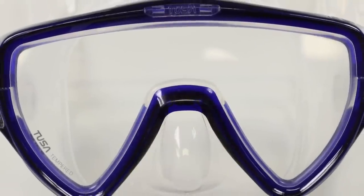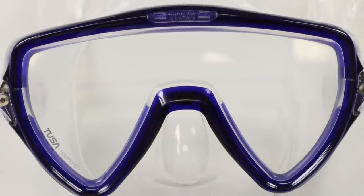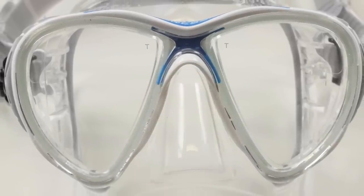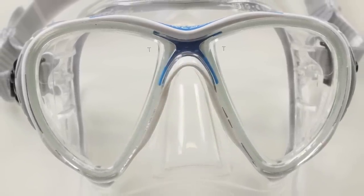Single lens masks have no frame construction across the bridge of the nose and can seem much more open but it is not possible to get replacement prescription corrective lenses. Twin lens masks are often compatible with replacement prescription lenses that are made by the manufacturer. These are easily fitted following removal of part of the frame.